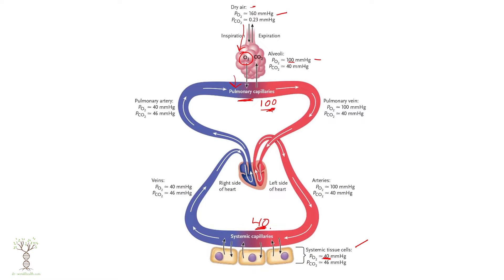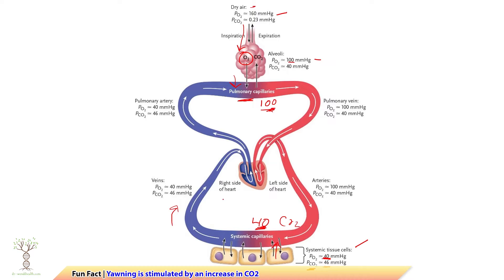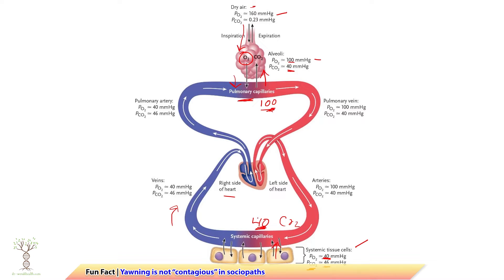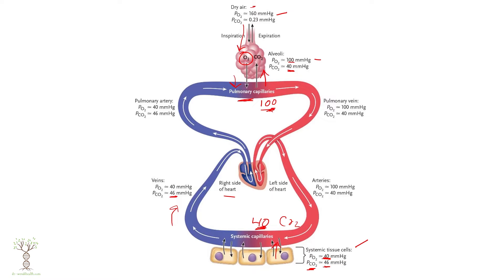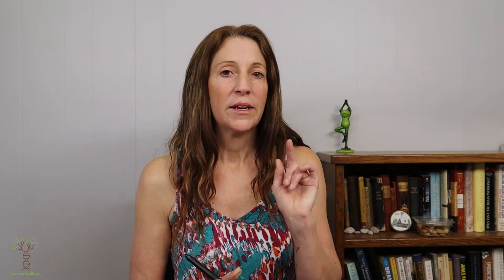When we look at carbon dioxide levels, they don't change a significant amount. In the tissues where carbon dioxide is being made, the partial pressure in our blood is about 46 millimeters of mercury. It then circulates through the venous system to the right side of the heart, goes back to the lungs, and we breathe off the carbon dioxide, decreasing it to around 40 millimeters of mercury.